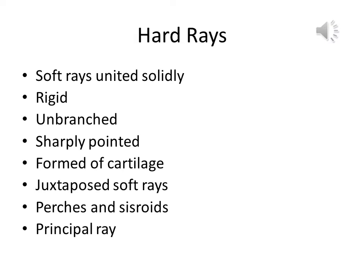The second type of fin rays is hard rays. Hard rays are formed from a number of soft rays — when soft rays are united solidly, they compose the hard rays. These are rigid, unbranched, and sometimes sharply pointed. These are formed of cartilage. When freed from the membranous sheaths folding them, they clearly show the juxtaposed — meaning combined — soft rays. Some perches and cichlids have such hard rays. The outermost caudal fin ray, called the principal ray, is also a type of hard ray.